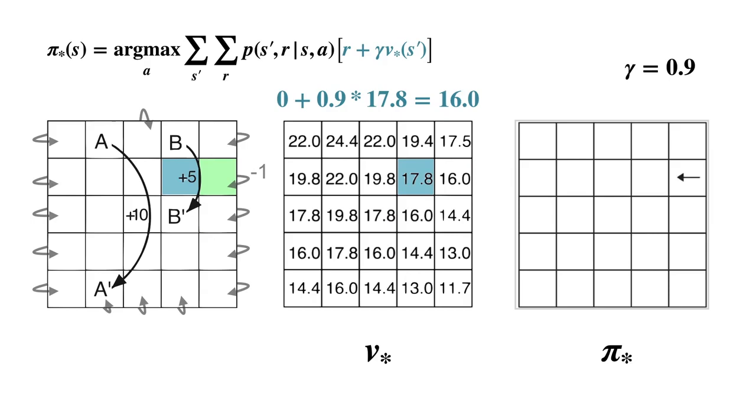Of all these choices, the highest value action is left at 16. Therefore, left is the optimal action in this state and must be selected by any optimal policy.